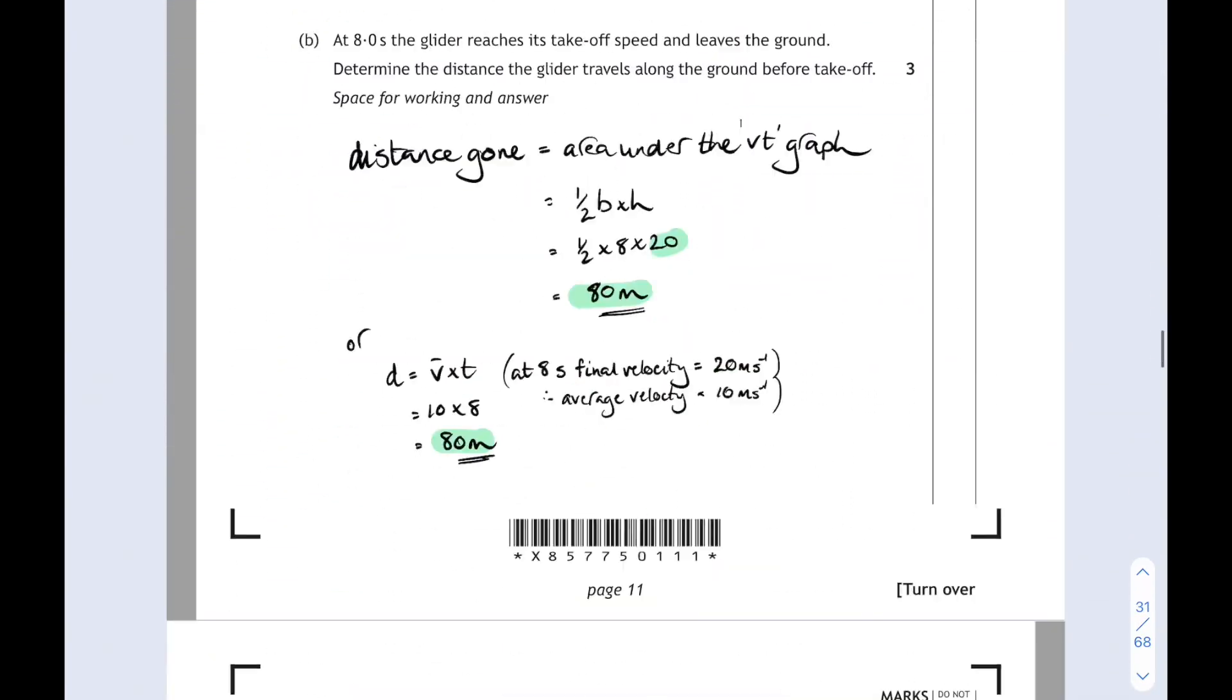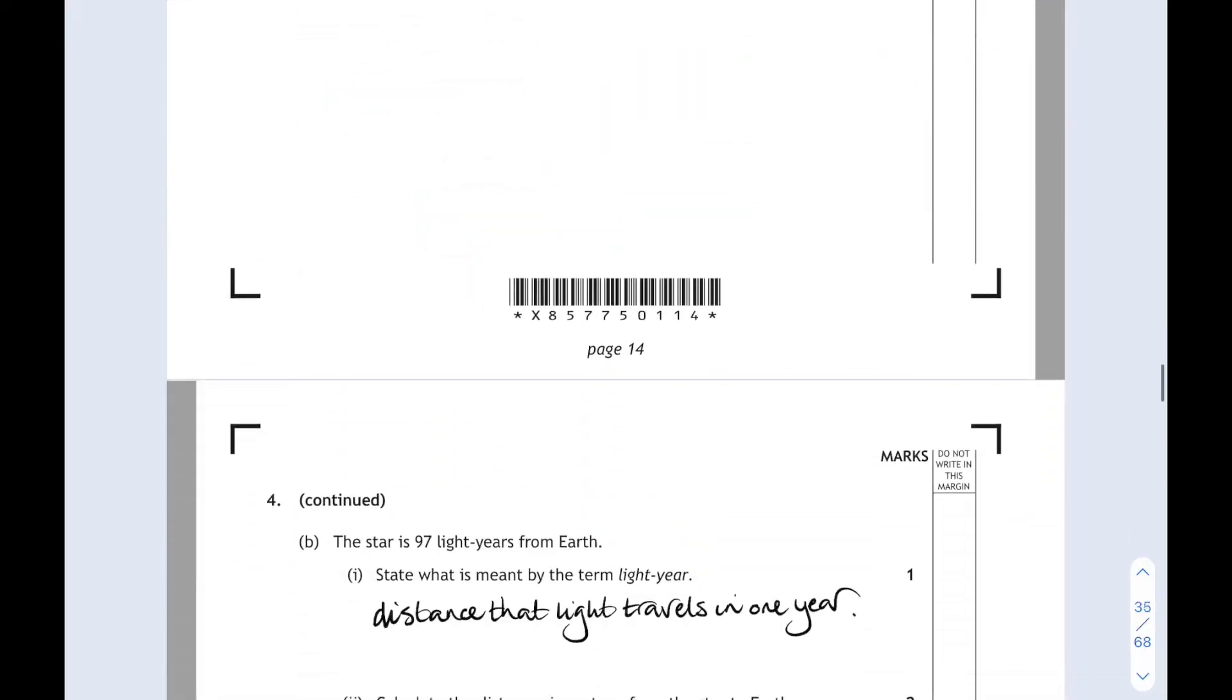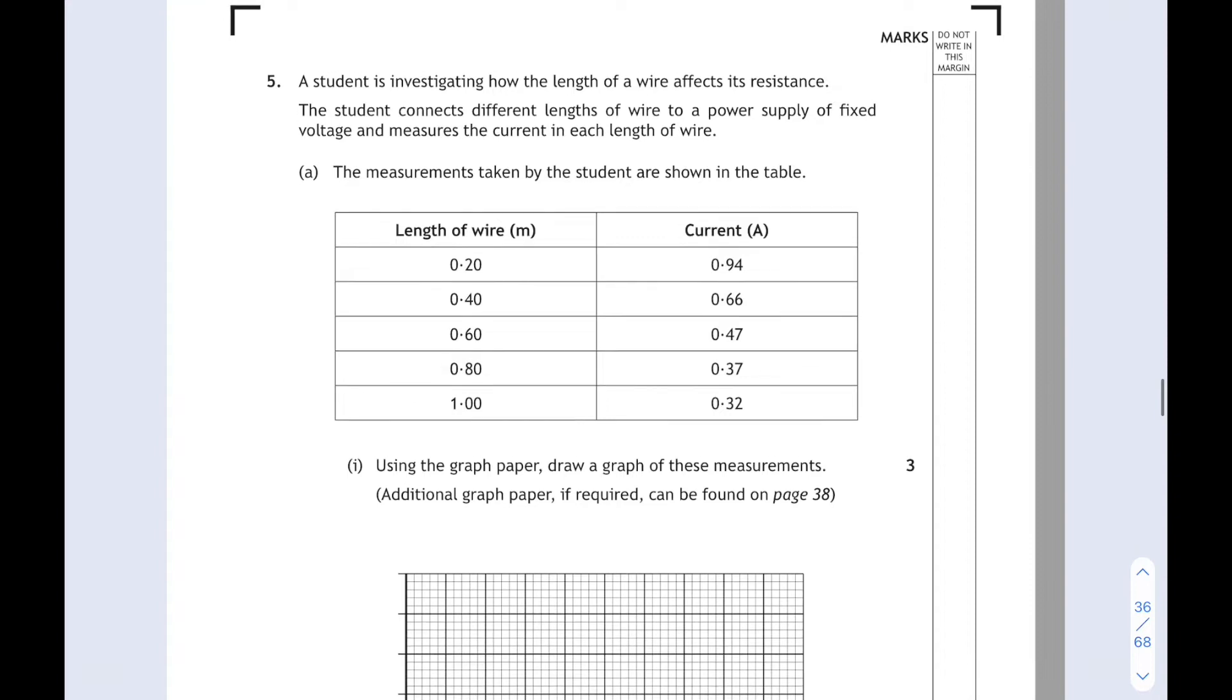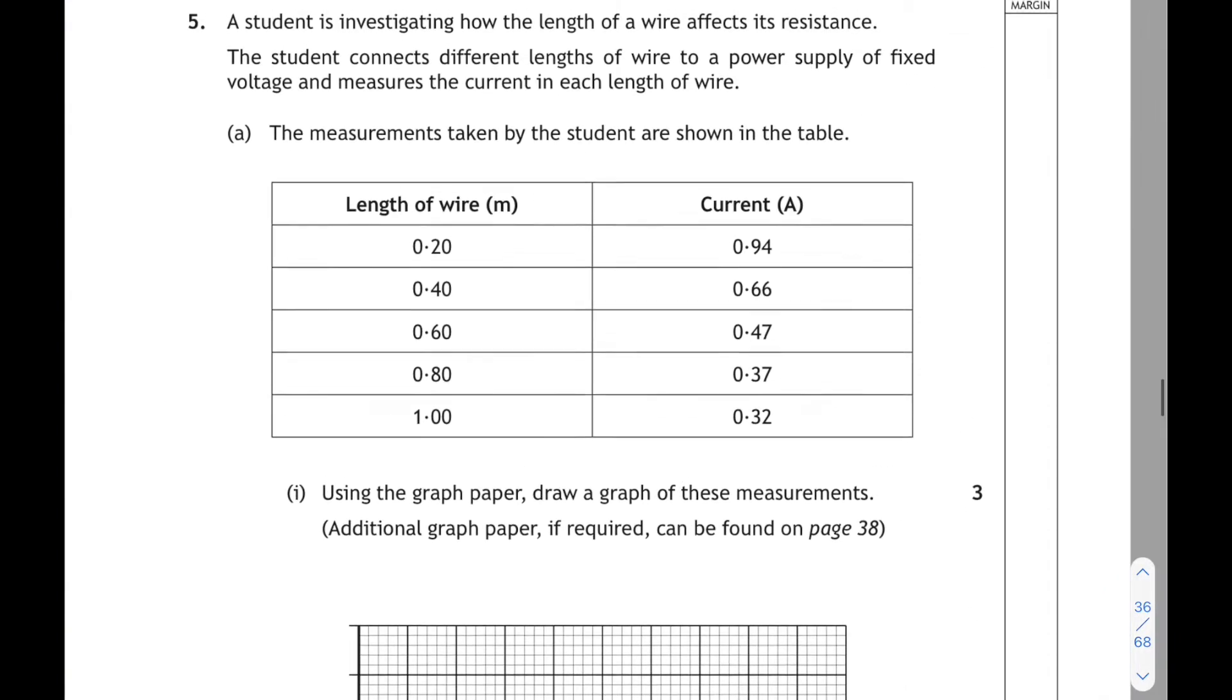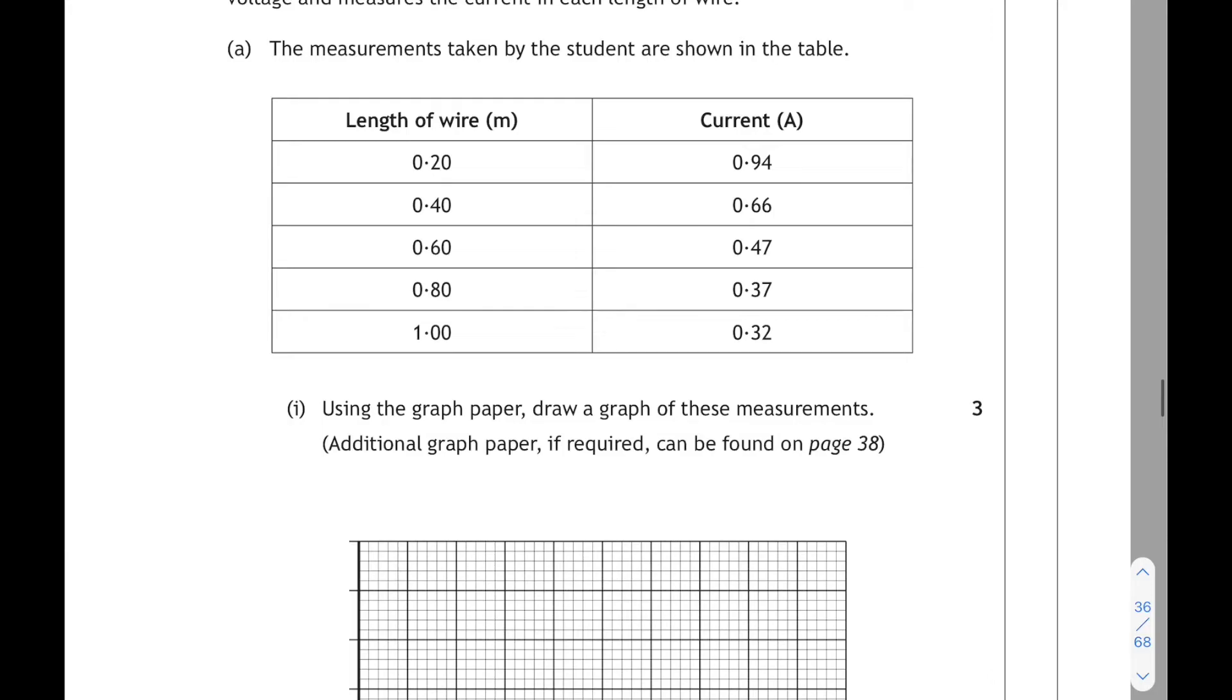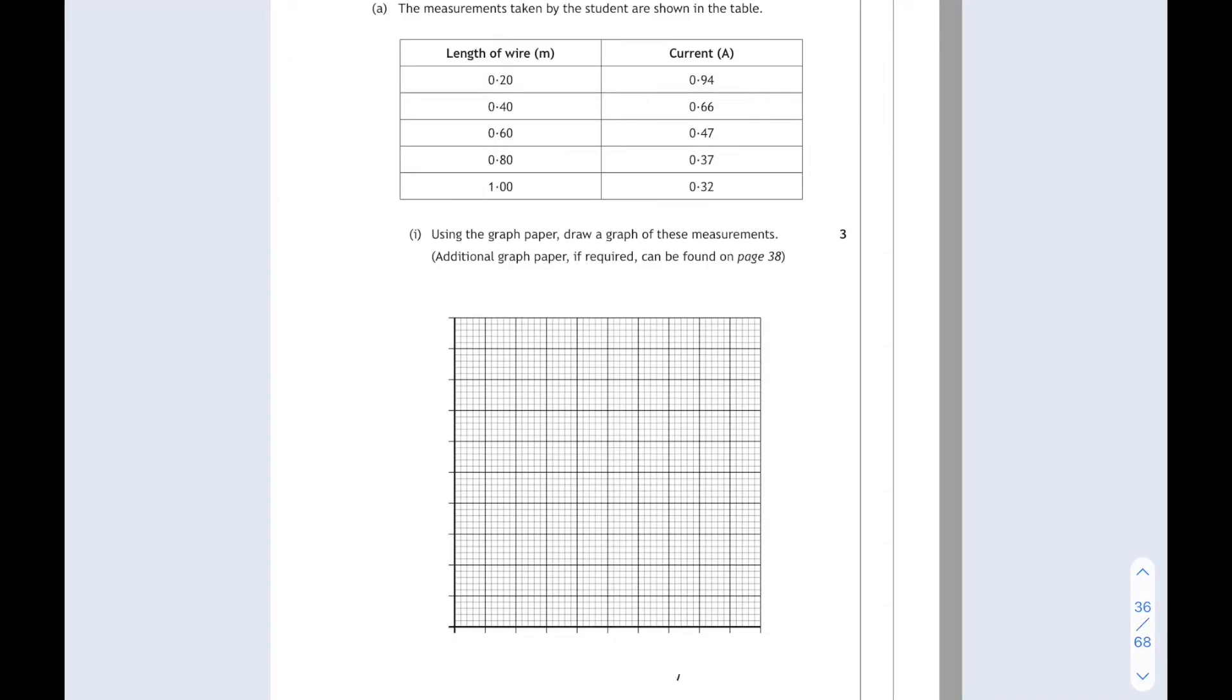Let's just pick up where we left off. We finished with question 4 and we're on question 5. The student is investigating how the length of a wire affects its resistance. The student connects different lengths of wire to a power supply of fixed voltage and measures the current in each length of wire. We have to draw a graph of these measurements. First things first, label the axes.